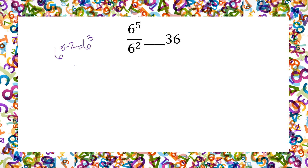So 6 to the 3rd — that's 6 times 6 times 6. 6 times 6 is 36, times 6 is 216. So 216 is greater than 36.